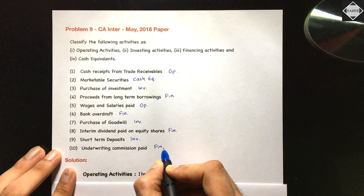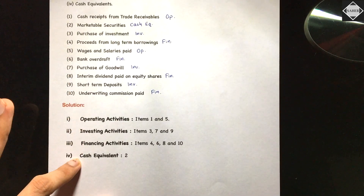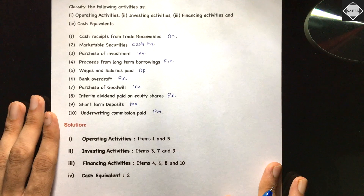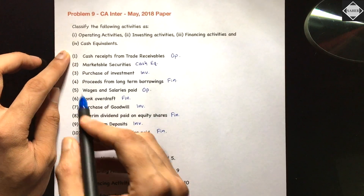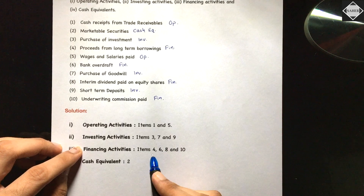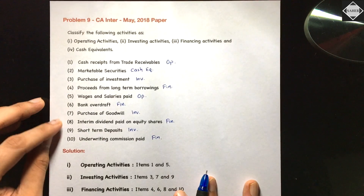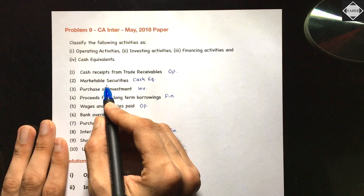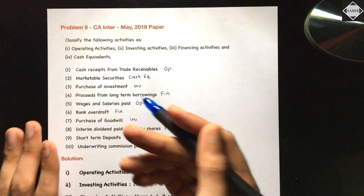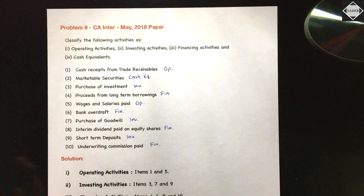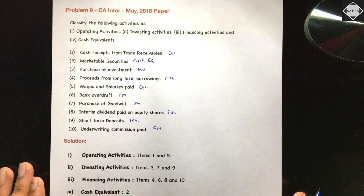In the exam, you write the answers like this: list the item numbers under each activity heading to save time. Operating activity: items 1 and 5. Investing activity: items 3, 7, and 9. Financing activity: items 4, 6, 8, and 10. Cash equivalents: item 2 (marketable securities — assumed highly liquid, no significant risk, maturity less than or equal to three months). That completes Problem 9.